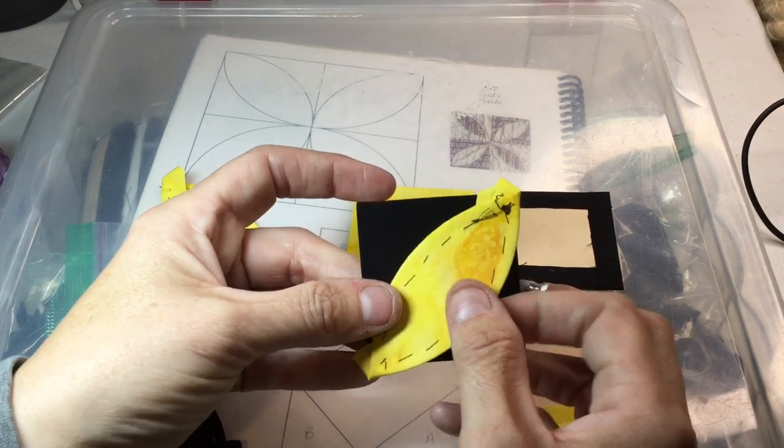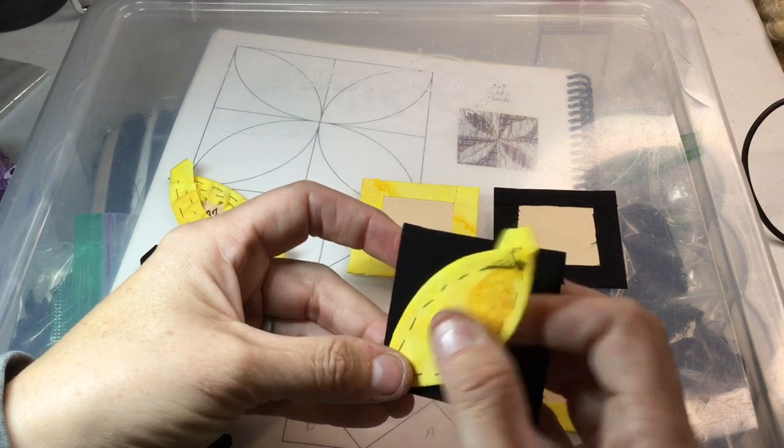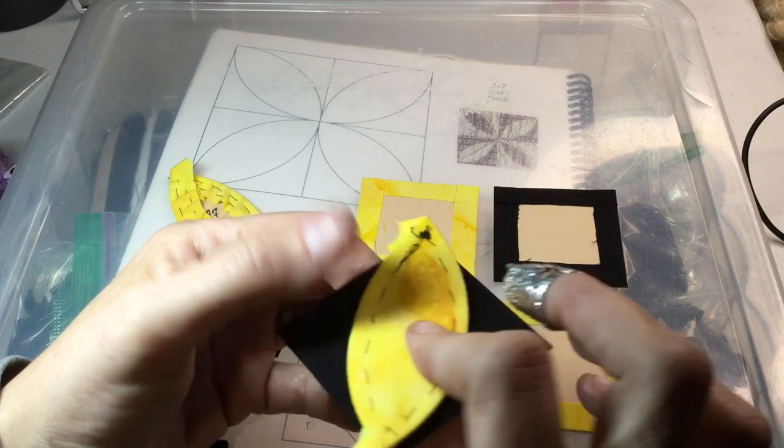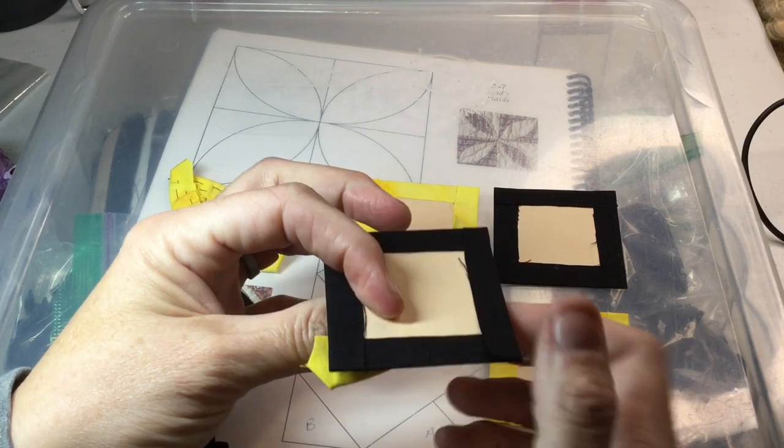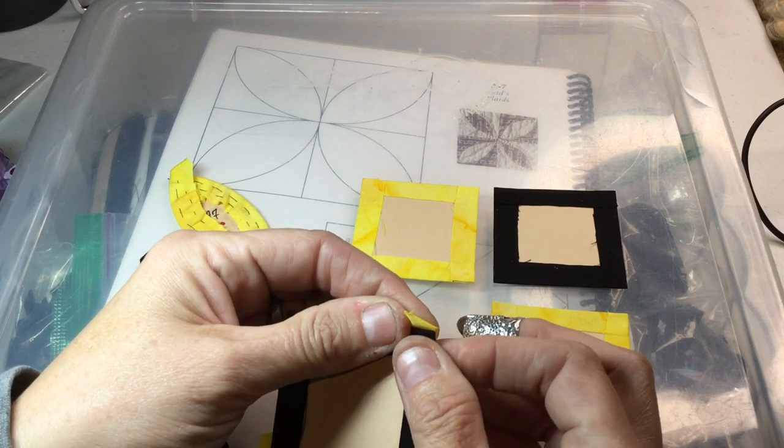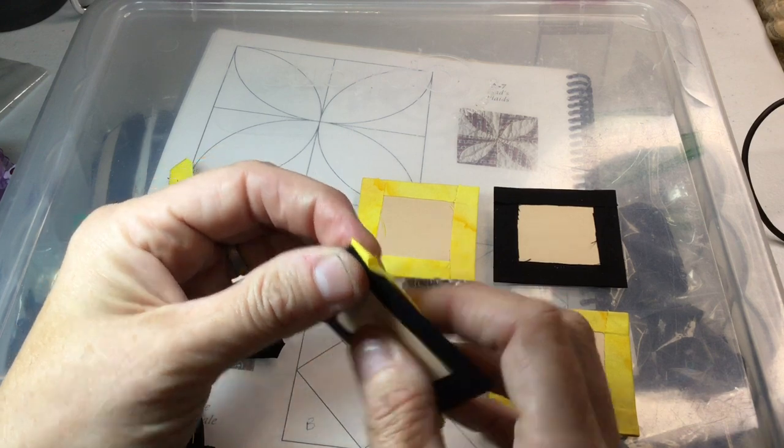I'm going to line up this point here. Now, these ends - these papers are exactly the same size as the squares, so they're going to go over a little bit and you should be able to take up some of that when you applique. But make sure that it's all in the same line.